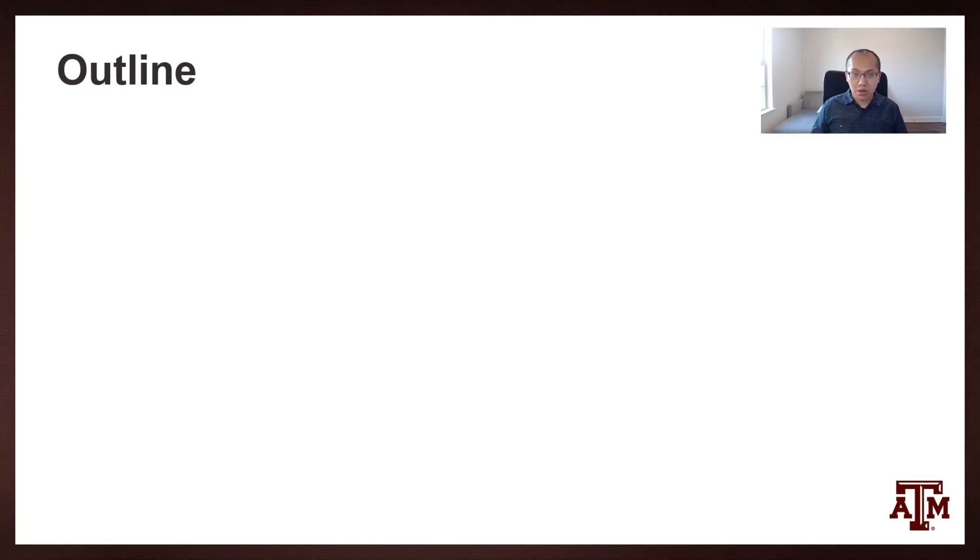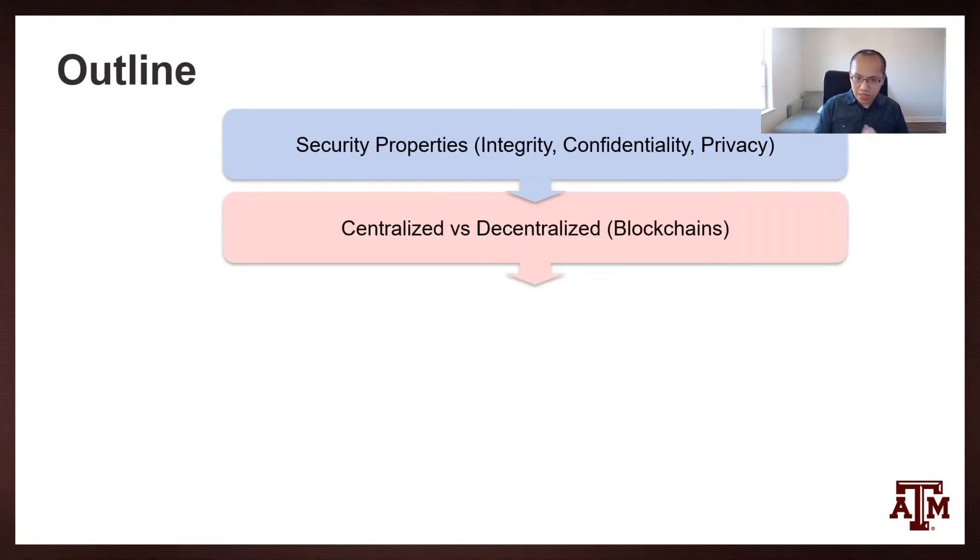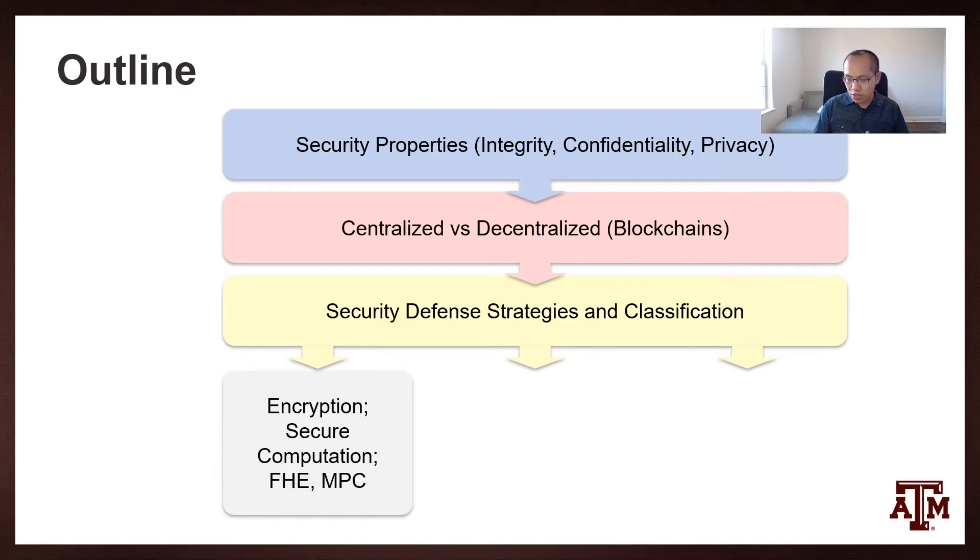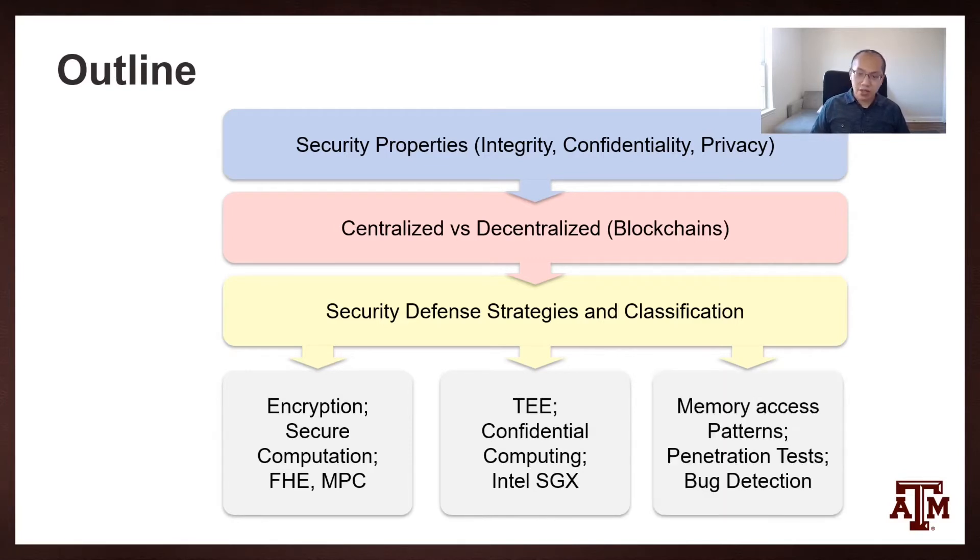First, I'm going to start with defining the security properties such as integrity, confidentiality, and privacy. Then I'm going to talk about the centralized versus decentralized models, including blockchains, and also security defense strategy and classifications. Finally, we're going to jump into a few paper specific backgrounds such as encryption, secure computations, homomorphic encryptions, MPC, TE, confidential computing, Intel SGX, memory access patterns, penetration testing, and bug detection.